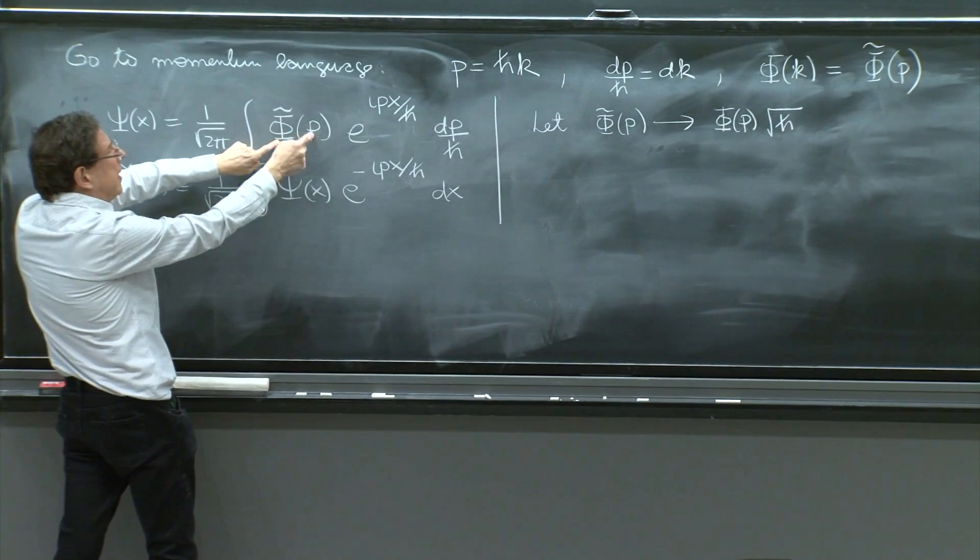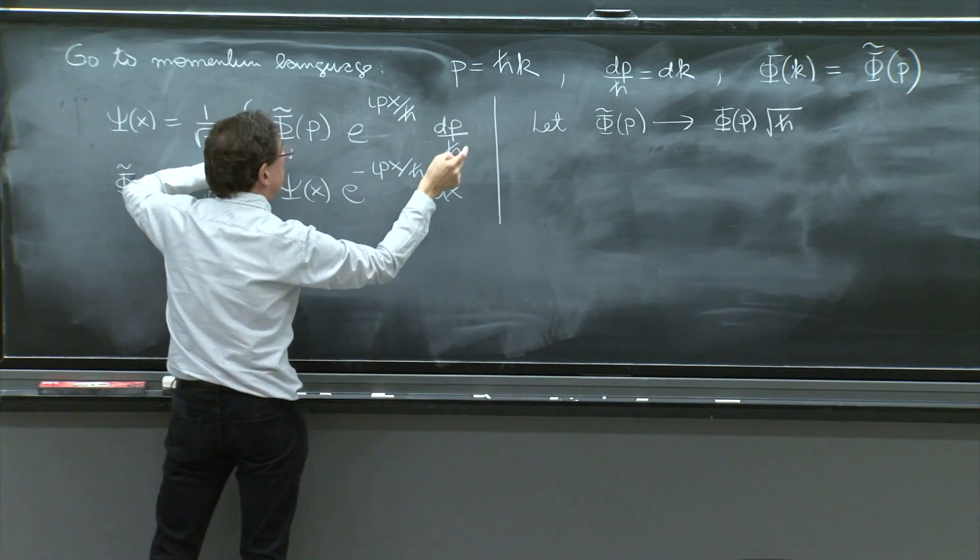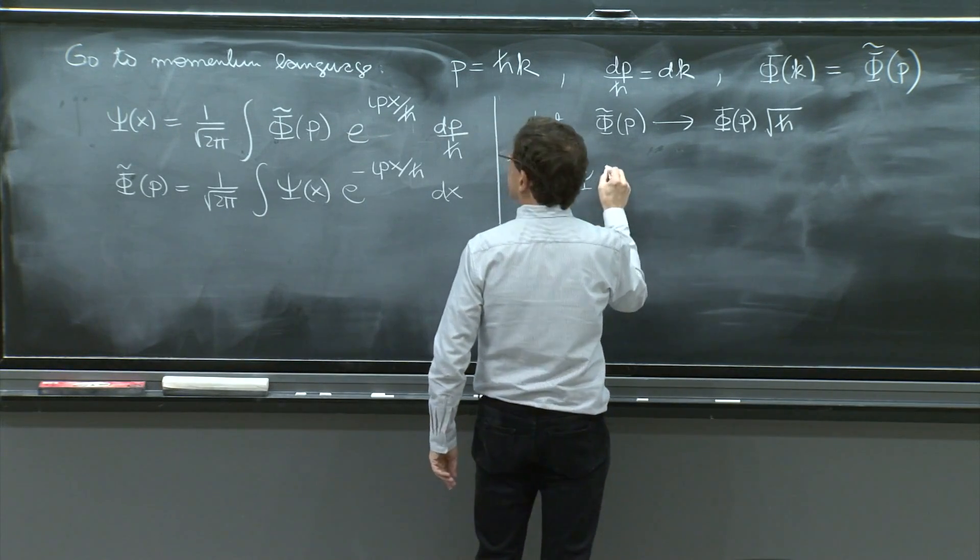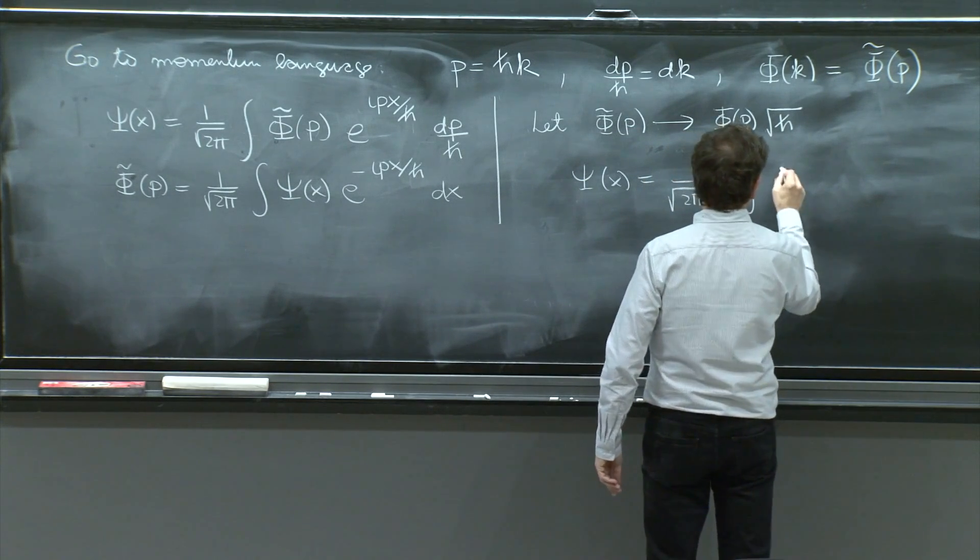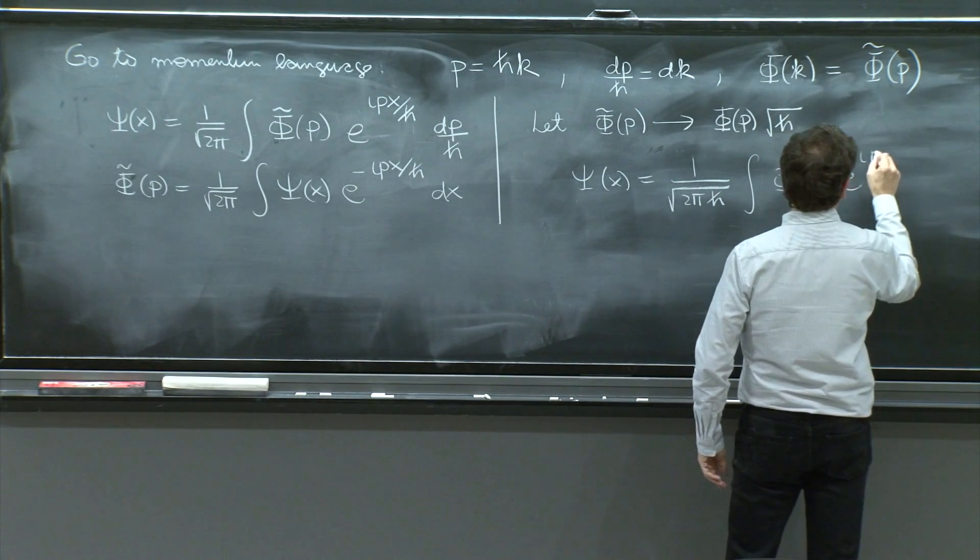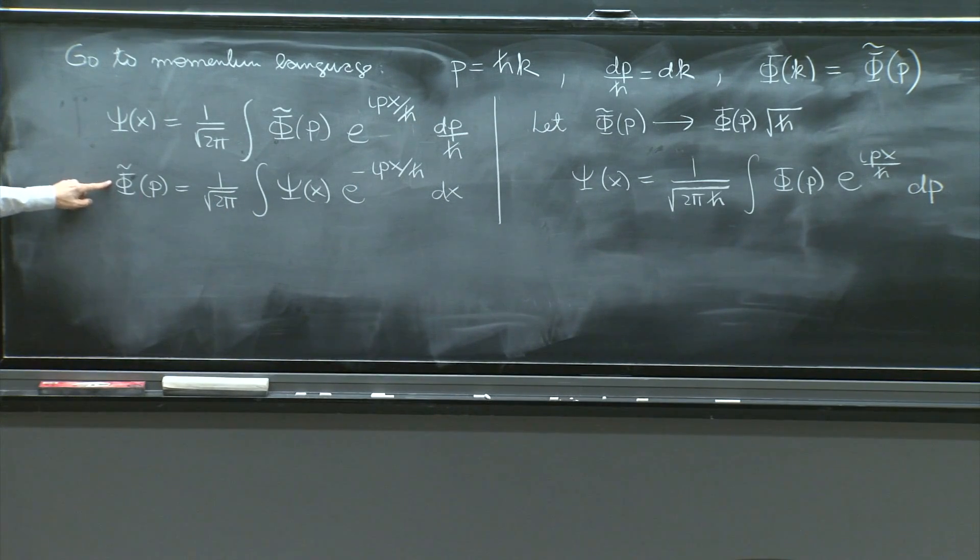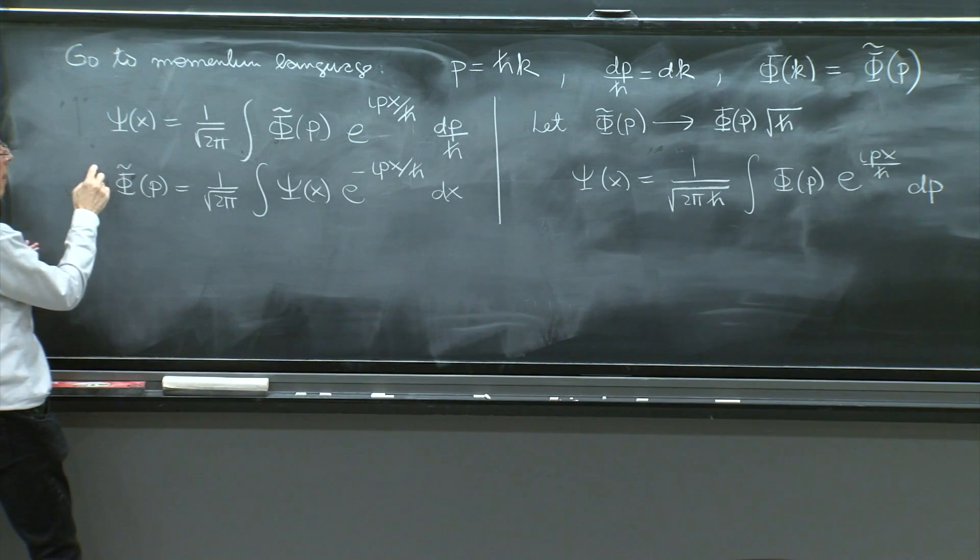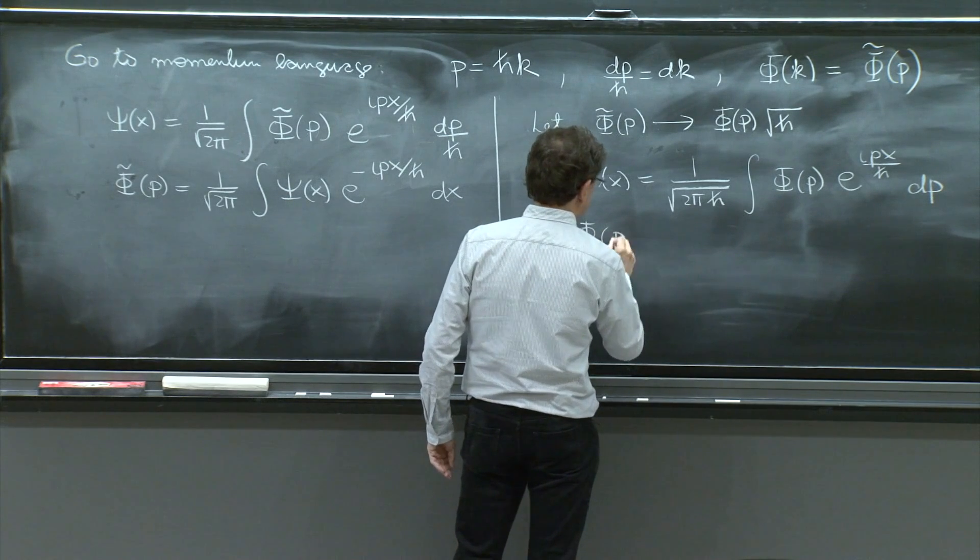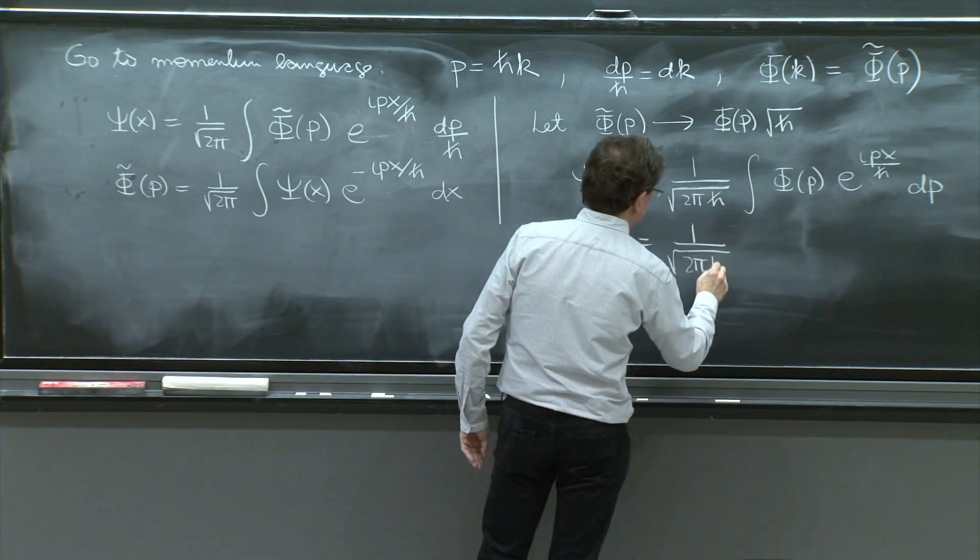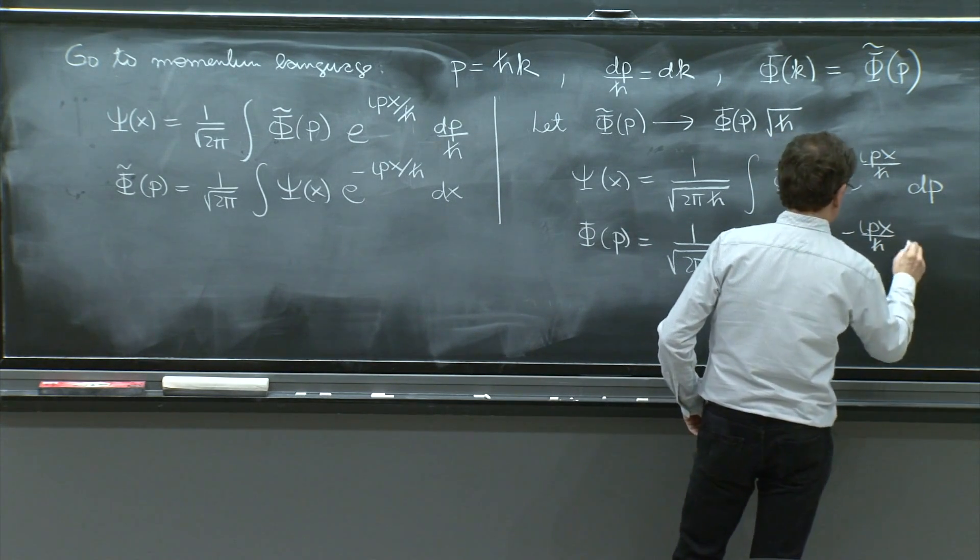So if I do that here, look, you will have a phi of p, no tilde, and 1 over square root of h bar. Because there will be a square root of h bar in the numerator and the h bar there. So this first equation will become psi of x, 1 over square root of 2 pi h bar integral phi of p e to the ipx over h bar dp. And the second equation here, you must replace it by a phi and a square root of h bar, which will go down to the same position here, so that the inverse equation is phi of p. Now, 1 over square root of 2 pi h bar integral psi of x e to the minus ipx over h bar dx.